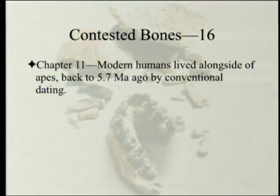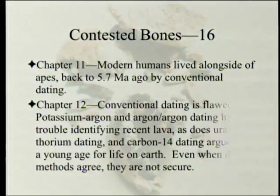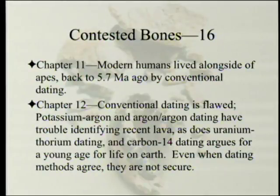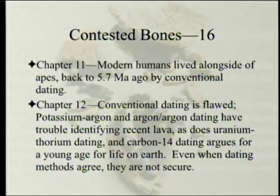In Chapter 7, they document that modern humans lived alongside apes going all the way back to 5.7 million years ago by conventional dating. In Chapter 12, they take up conventional dating and show that it's flawed. Potassium-argon and argon dating have trouble identifying recent lava, as does uranium-thorium dating. Carbon-14 dating argues for a young age for life on Earth, and the chapter finishes with a classic case showing that even when dating methods agree, that doesn't mean they can't be changed.